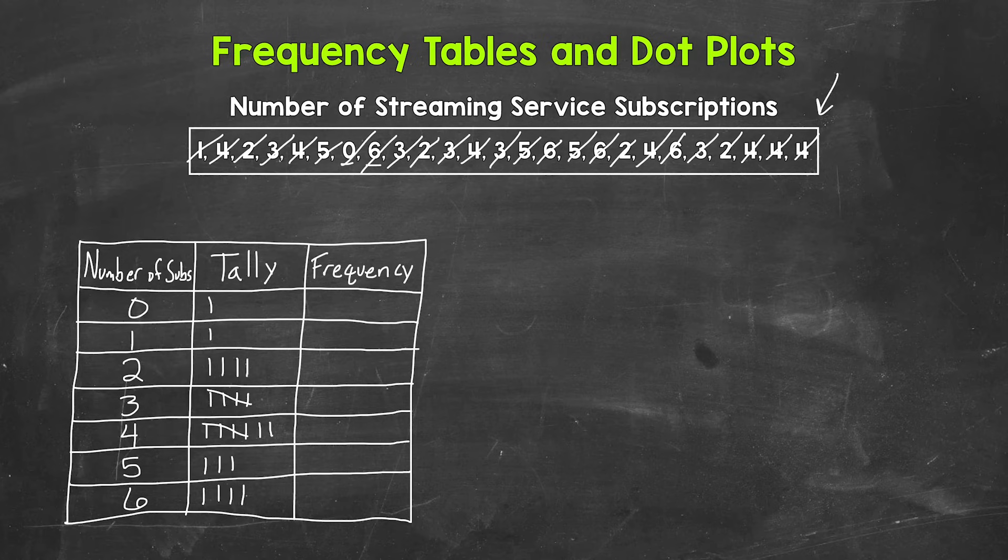We can do our final counts for the frequency column. Starting with zero, we have one person with zero subscriptions. One person for one subscription. Four people for two subscriptions. Five people for three subscriptions. Seven people for four subscriptions. Three people for five subscriptions. And four people for six subscriptions.